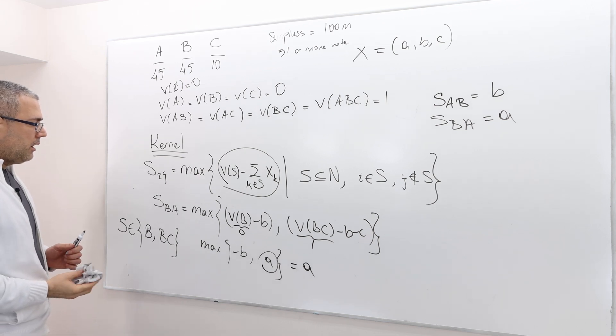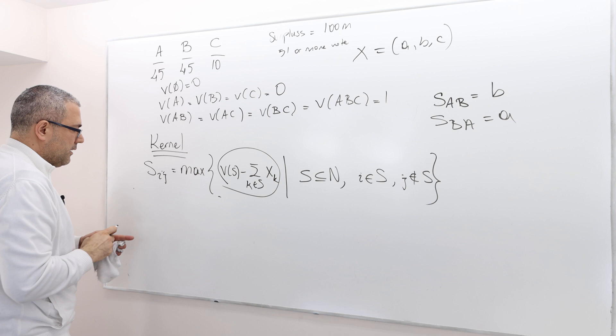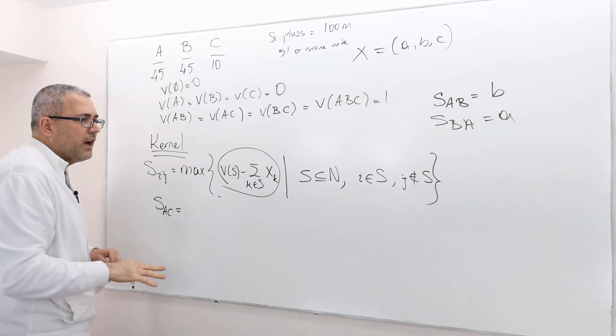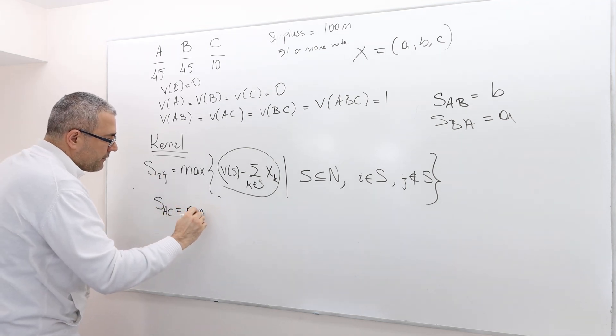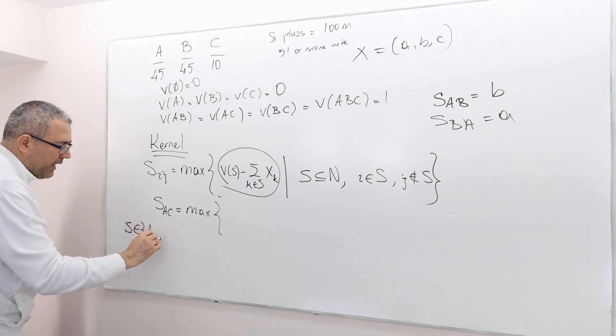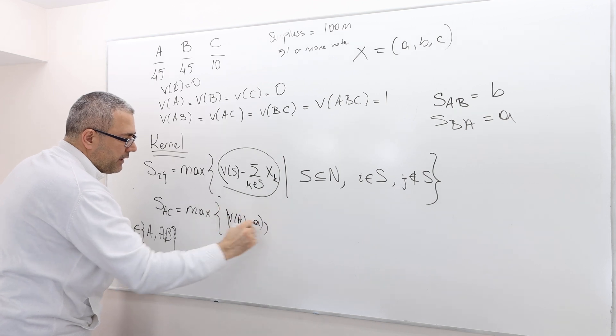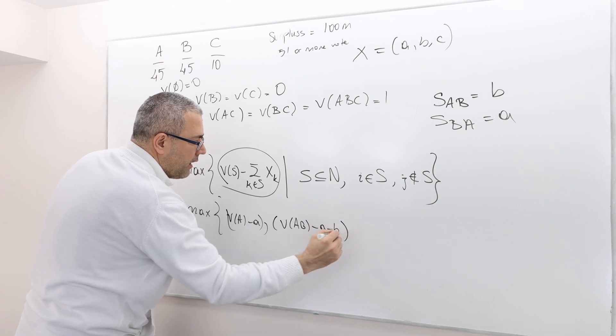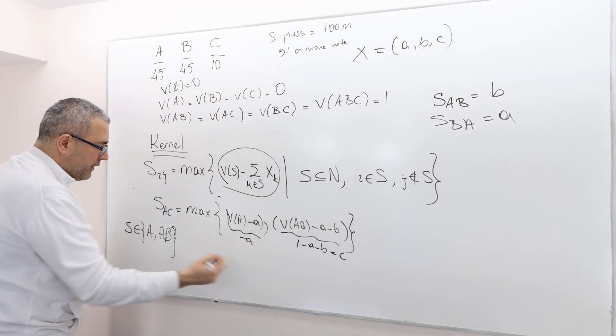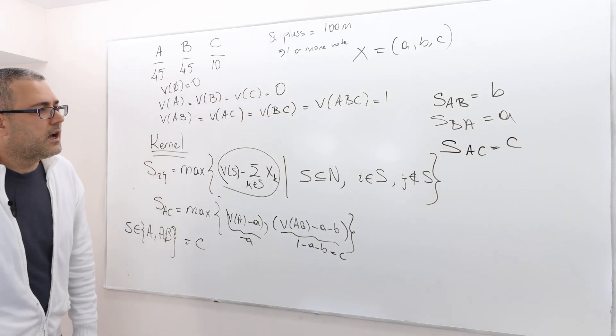Let's do the following: SAC. So once again, what are the possible set S? Well, A is in it but C is not. So A and AB. That's the only two coalitions. So therefore, what is V(A) minus A? This is the first thing that we are comparing. And then V(AB) minus A minus B. This is the second thing we're comparing. So this is V(A) is 0 minus A. This is 1 minus A minus B, which is equal to C. So therefore, this thing is equal to C. SAC is equal to C.